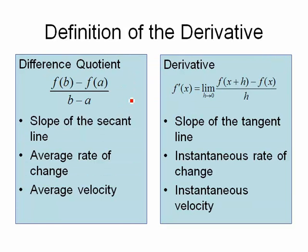What you should be starting to notice is we talked about difference quotients — that was f of b minus f of a over b minus a — and now we've also talked about derivatives. Notice you see a difference in f's divided by h, which is a difference between two points, kind of like b minus a. But when we do the derivative, the points get closer and closer together. That's why we need h approaching zero, whereas with difference quotients and average rates of change, it's just two arbitrary points.